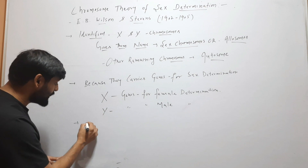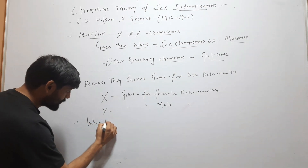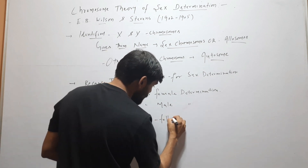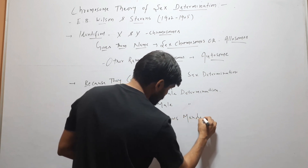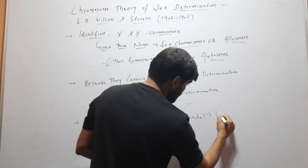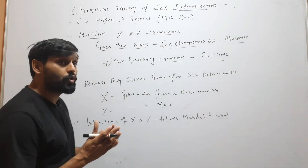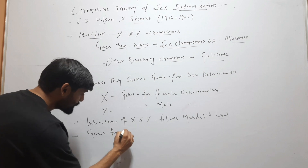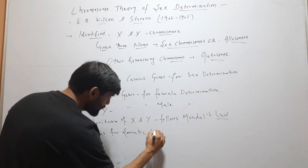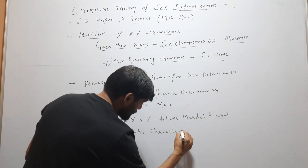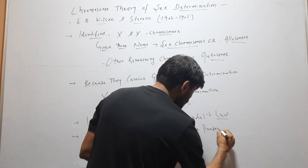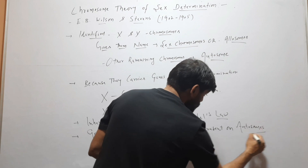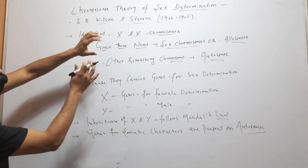Inheritance of X and Y follows Mendel's law, so inheritance occurs according to Mendel's law. Genes for somatic characters are present on autosomes. These are the postulates of the chromosome theory of sex determination.